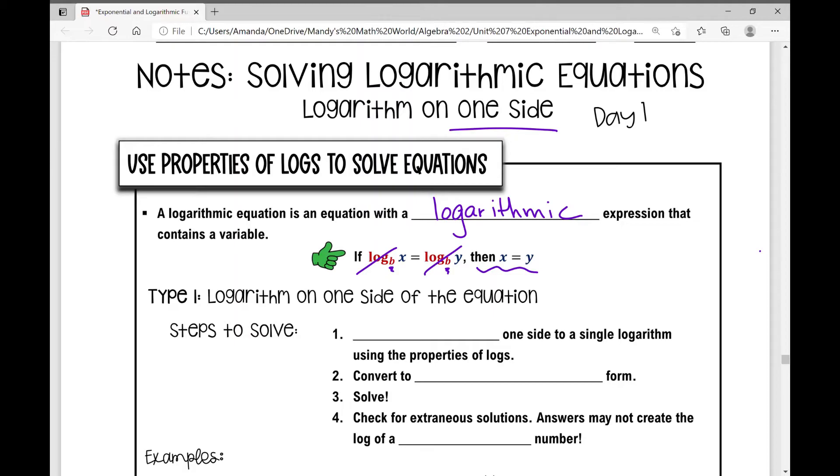The first type we're going to look at today: logarithm on one side of the equal sign. The steps to solve are, the very first thing you're going to do if you need to, is condense one side to a single logarithm using the properties of logs. Then we'll convert this to exponential form. We'll rewrite this if possible.